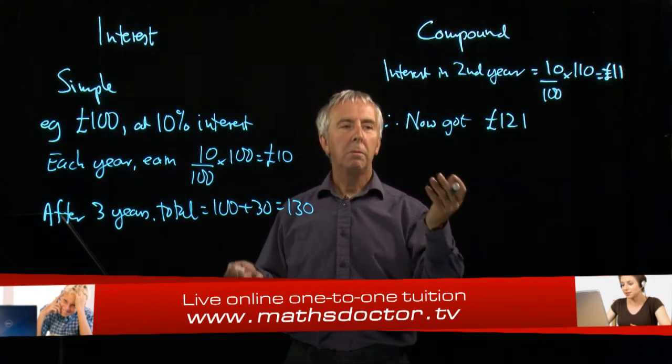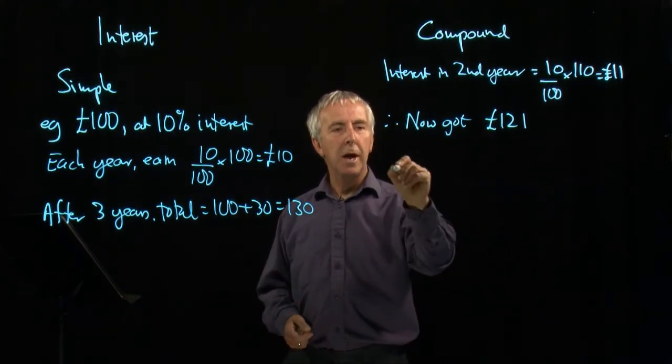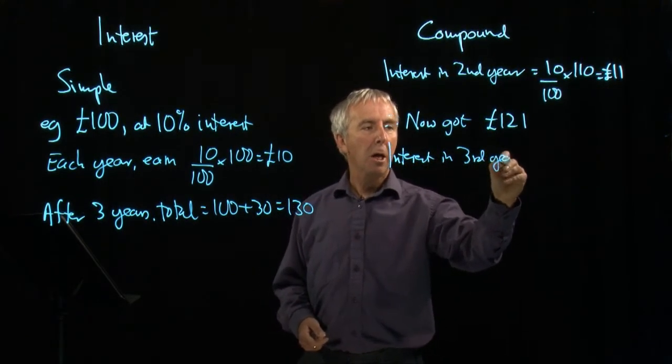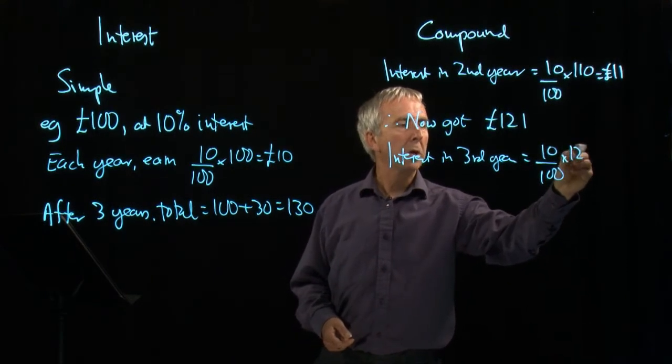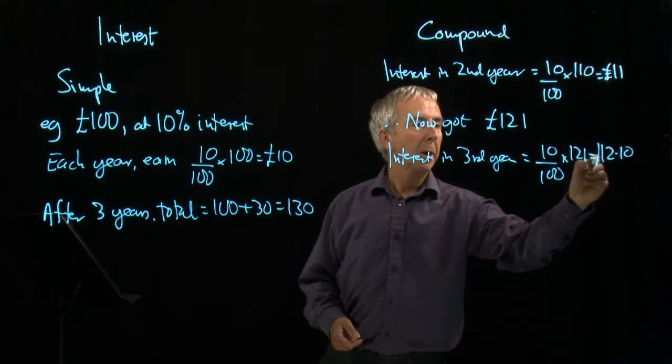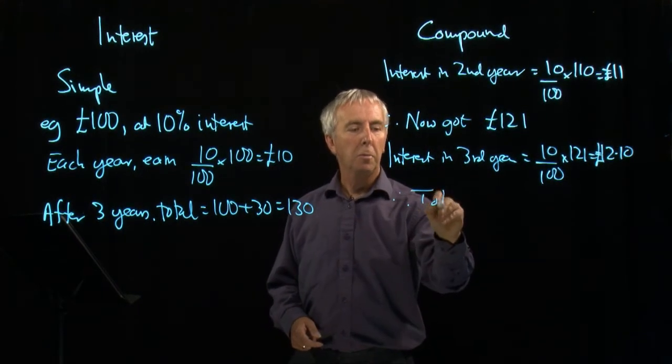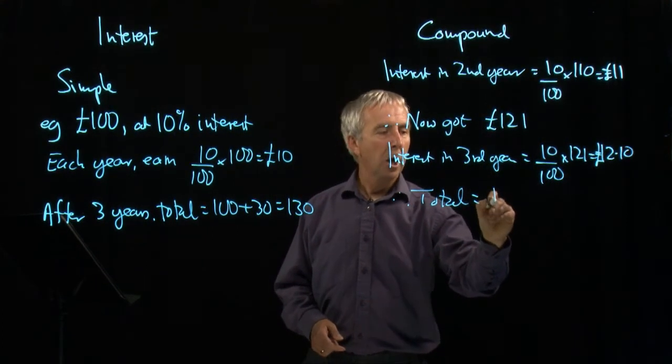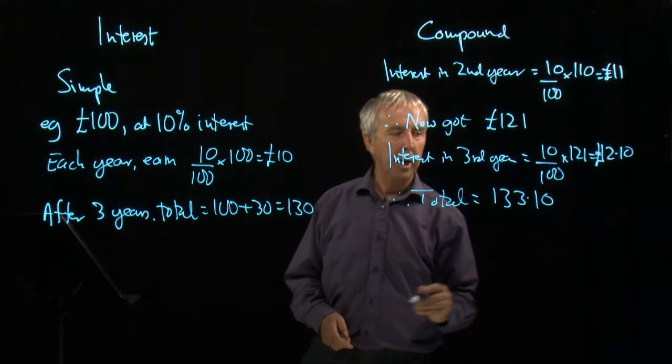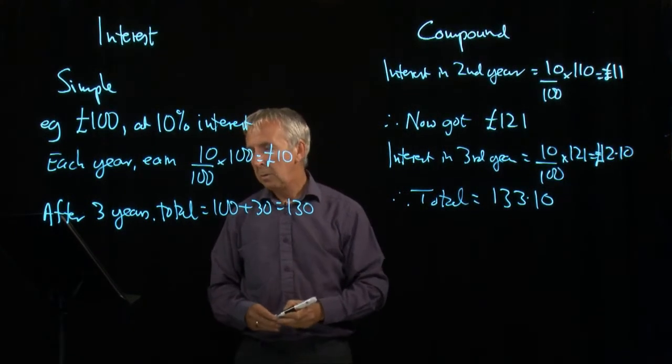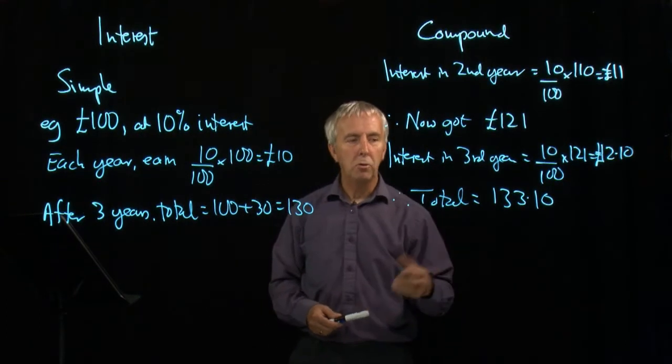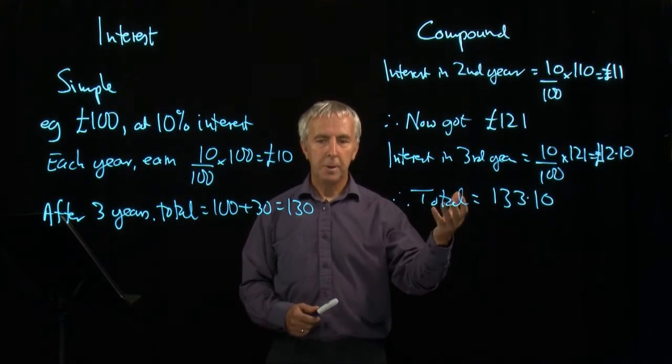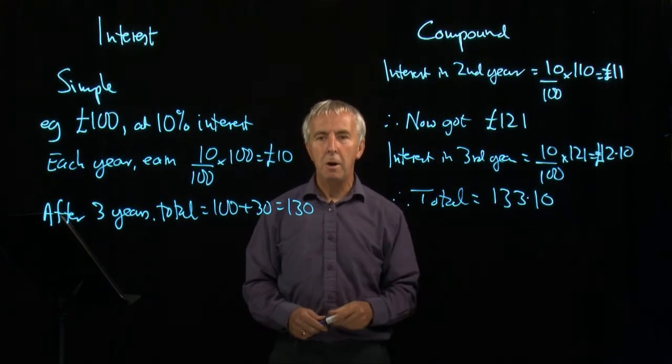And in the third year we can work out 10% of that. So the interest in the third year is 10% of £121 which is £12.10, and so the total is £133.10. Under simple interest it was £130. Under compound interest it's £133.10. So it's growing a little bit faster, and in fact that difference gets magnified as time passes.